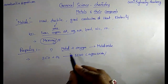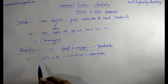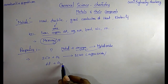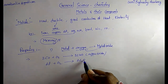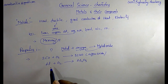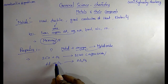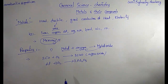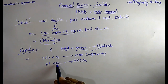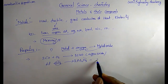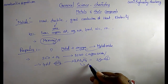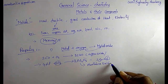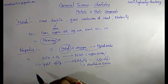If metals react with oxygen, they give metal oxides. For example, aluminum reacts with oxygen to produce aluminum oxide (Al₂O₃). Balancing the equation: 4Al + 3O₂ → 2Al₂O₃. The key point is: if a metal reacts with oxygen, it gives a metal oxide.